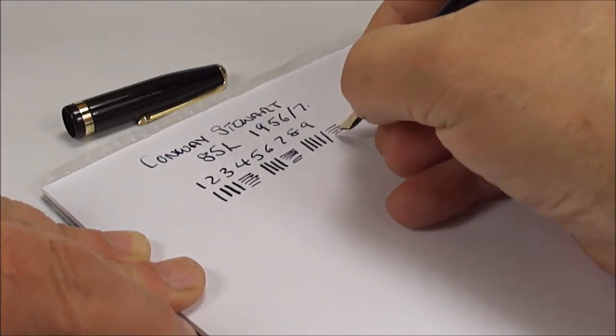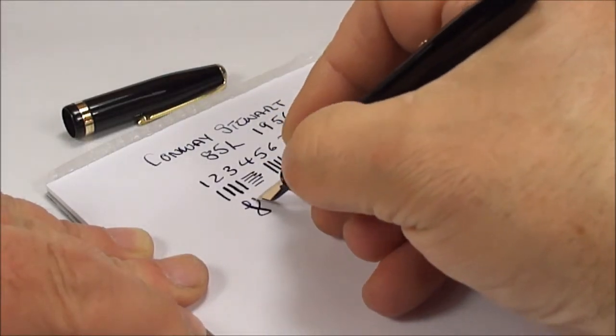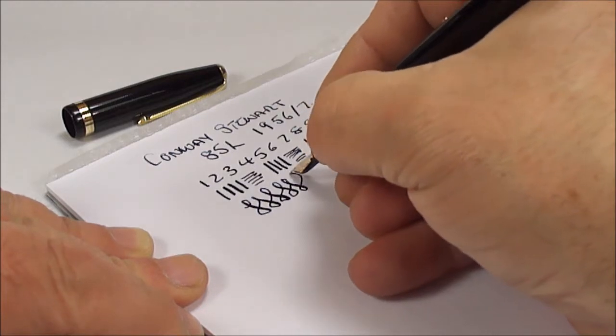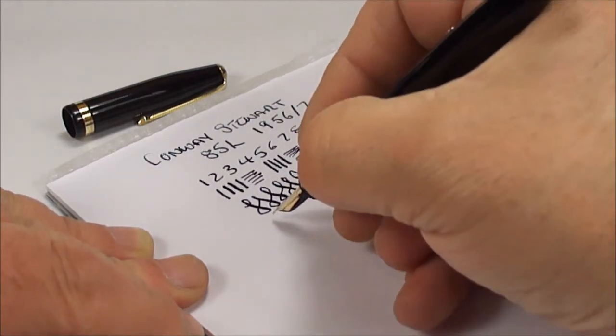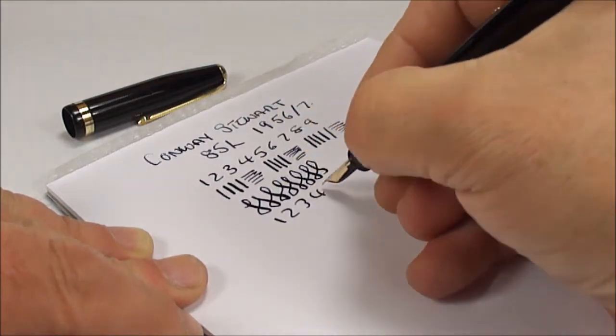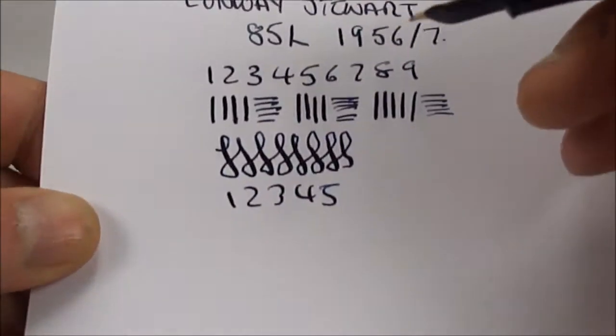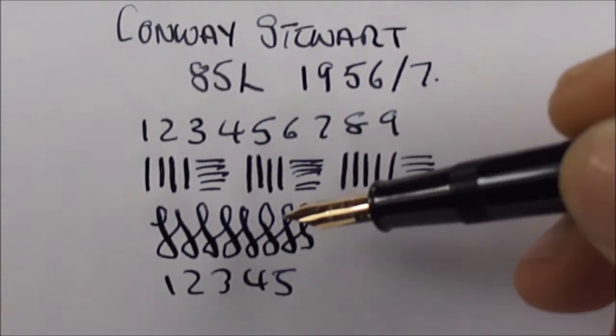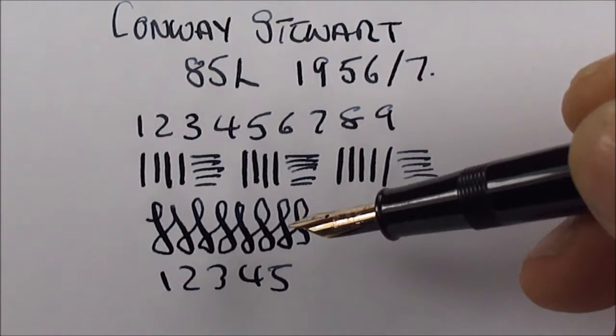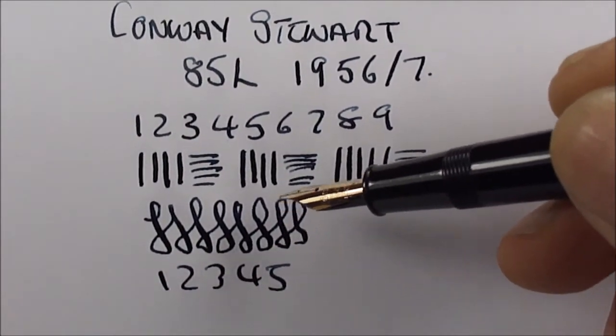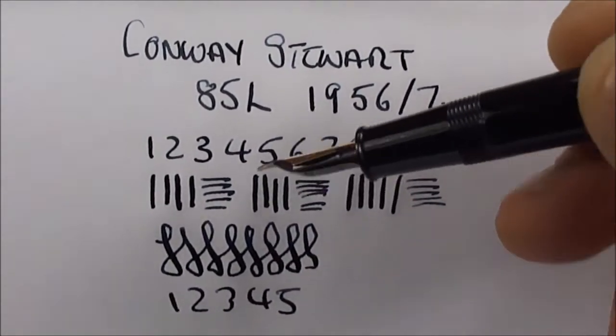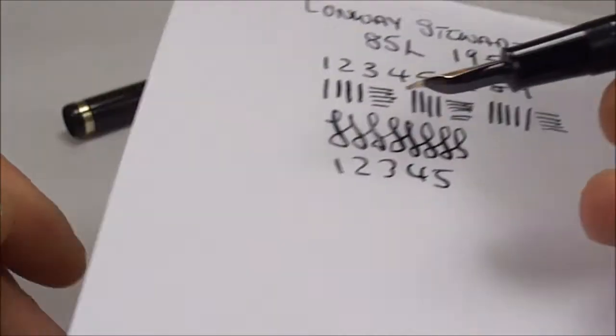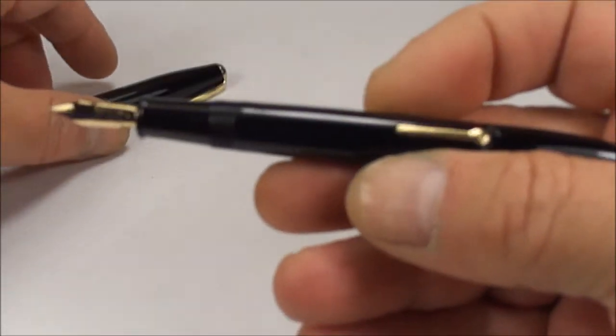When we take the pressure off, obviously we're getting a finer line. So a lovely writer. As you can see, with a little bit of pressure on the downward stroke, we're getting a little bit of a broader line. The cross strokes are quite fine. All in all, a lovely writer, as you'd expect from a quality pen from Conway Stewart.